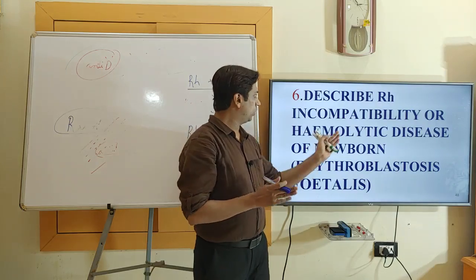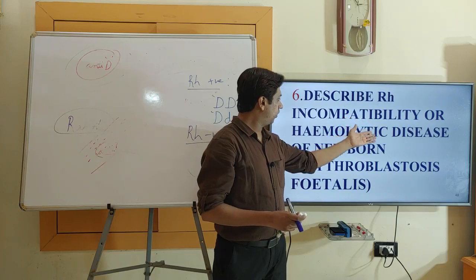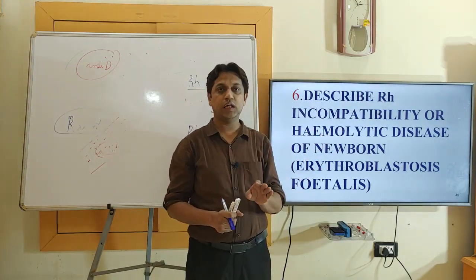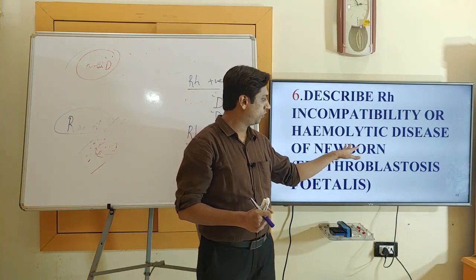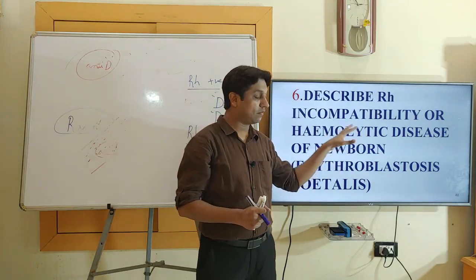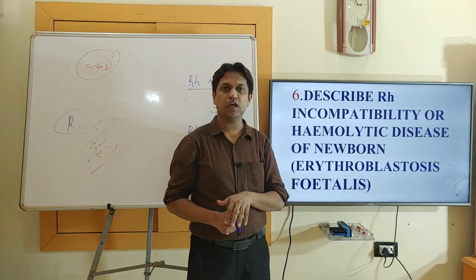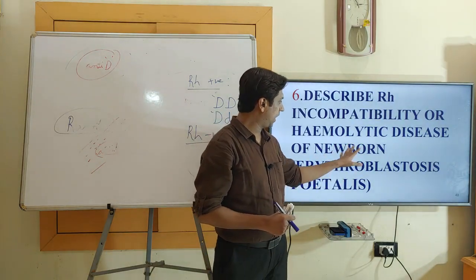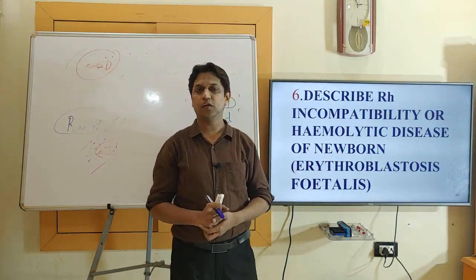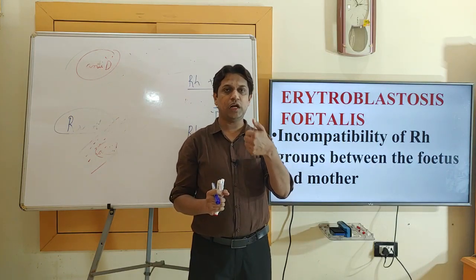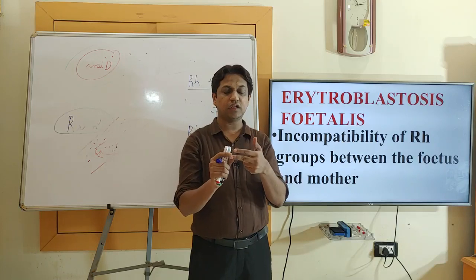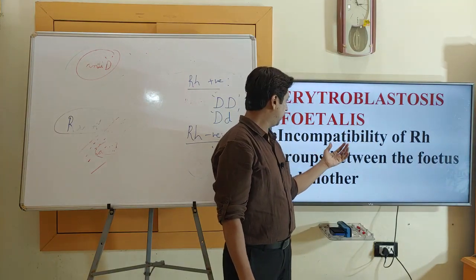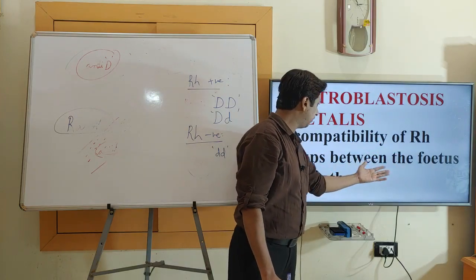Now moving to the next objective: describing RH incompatibility, also known as hemolytic disease of the newborn or erythroblastosis fetalis. This topic is very important both clinically and from an exam perspective for MBBS first-year physiology. It has been asked many times as a long essay for 10 marks or short notes for 5 marks. This condition results from incompatibility of RH blood groups between the fetus and the mother.